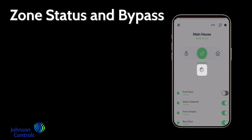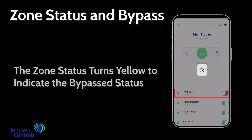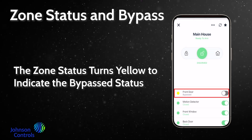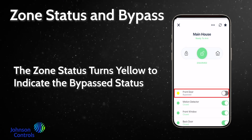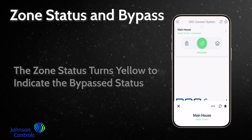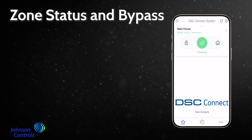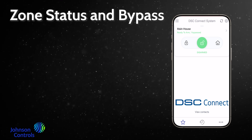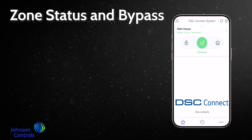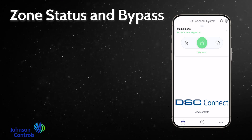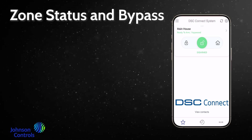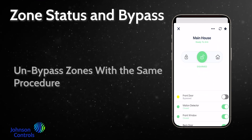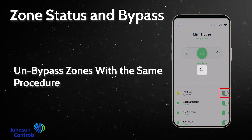The zone status turns yellow to indicate the bypassed status. Un-bypass zones with the same procedure.